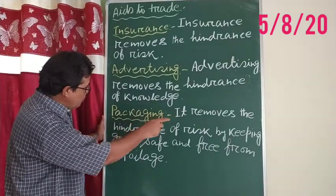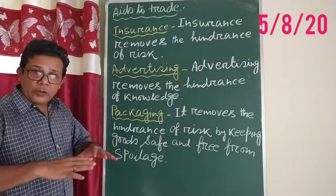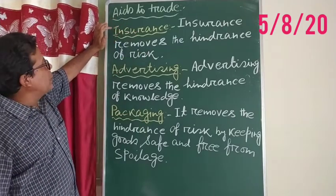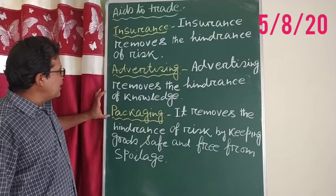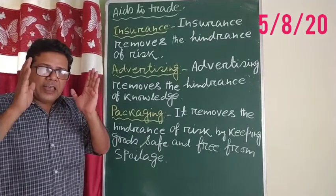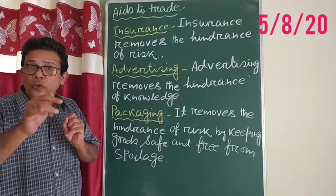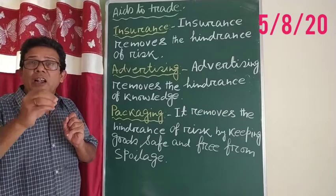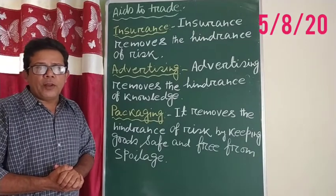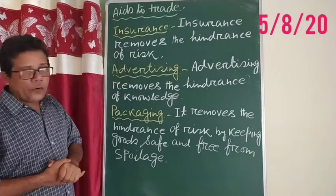So what have you understood today? I discussed three types of Aids to Trade: insurance, advertising, and packaging. Insurance, advertising, and packaging are helping trade — that is, buying and selling of commodities or goods smoothly, nicely, with less difficulties and problems. That is why they are also called Aids to Trade. I hope it has been clear to you what are the Aids to Trade. Thank you.